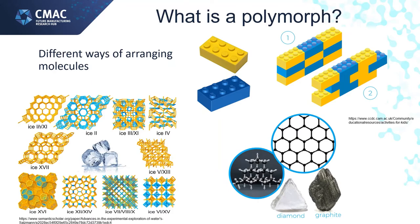They are made of exactly the same stuff. In diamond, the carbon is arranged in a pattern that is very strong, which is why diamond is the hardest material. Graphite, which is actually what the lead in your pencil is, is carbon arranged in layers. When you write or draw with your pencil, the layers come off. You couldn't do that with a diamond.